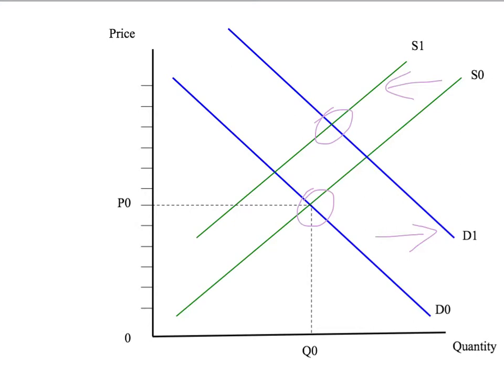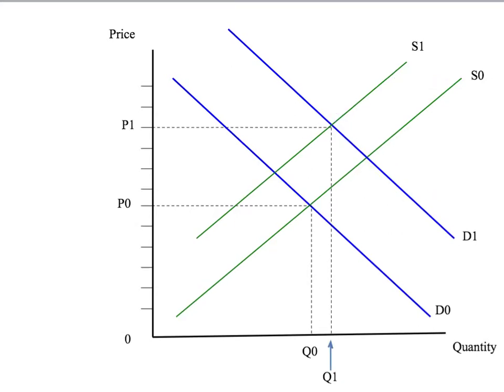Our equilibrium has gone from where our original demand and supply curves intersect each other to where our new demand and supply curves intersect each other. So, as drawn here, the two changes together unambiguously lead to an increase in price, and as we've drawn it here, also lead to an increase in our predicted quantity. But it's pretty easy to see that our change in predicted quantity depends on the degree to which the demand curve shifts to the right compared to the degree to which the supply curve shifts to the left.